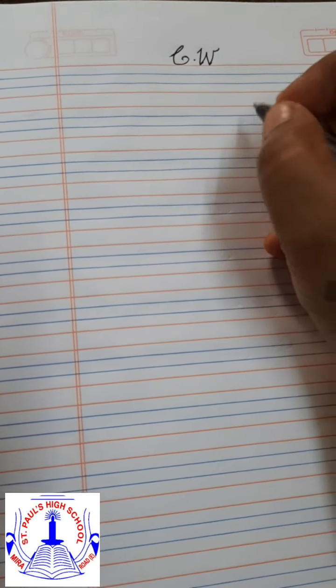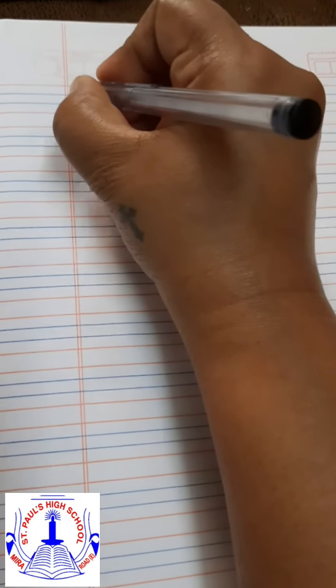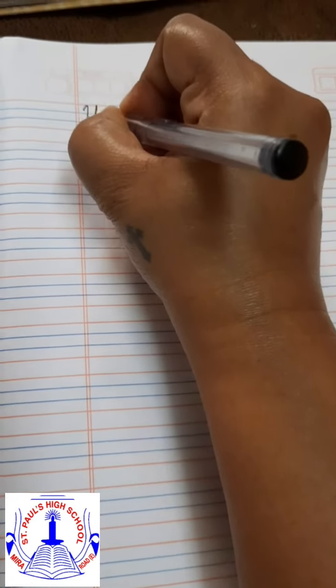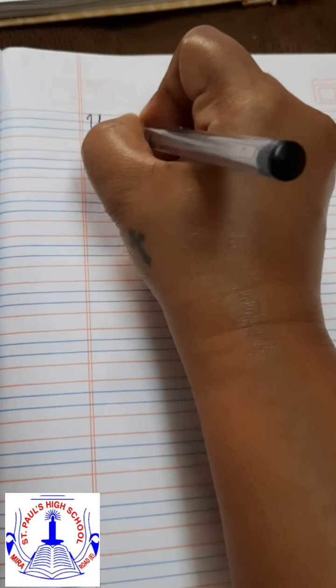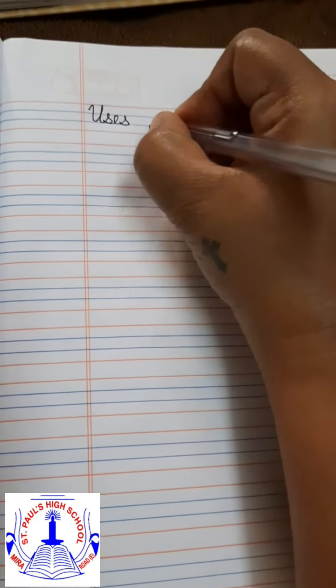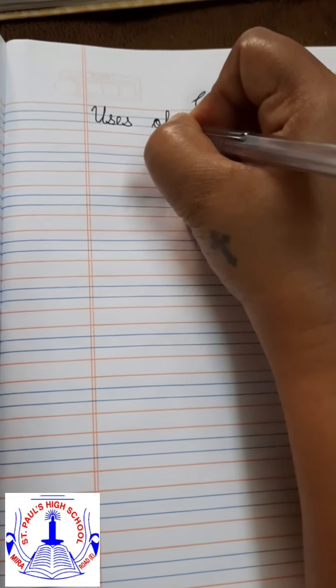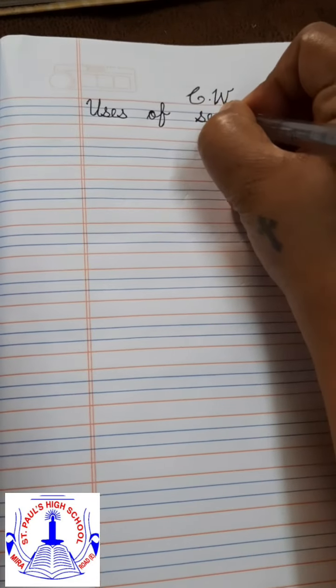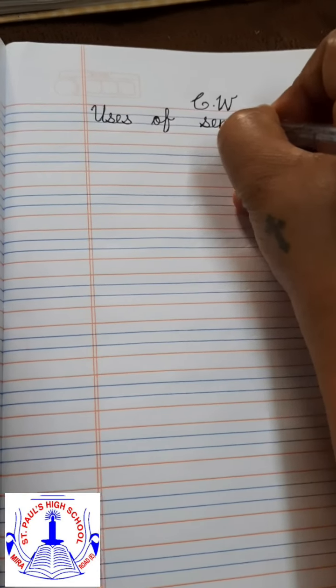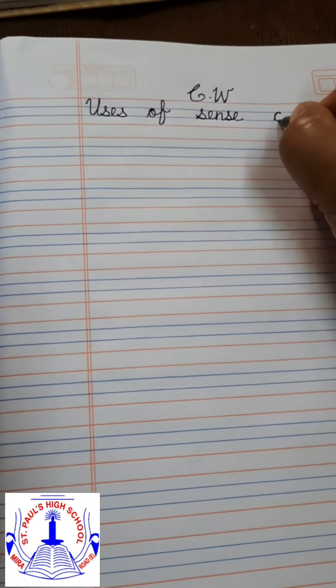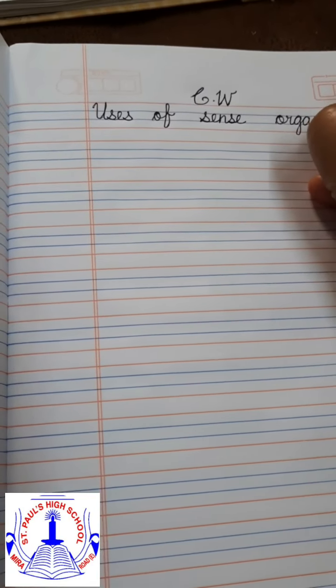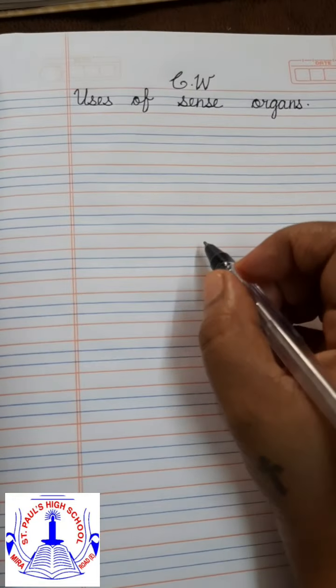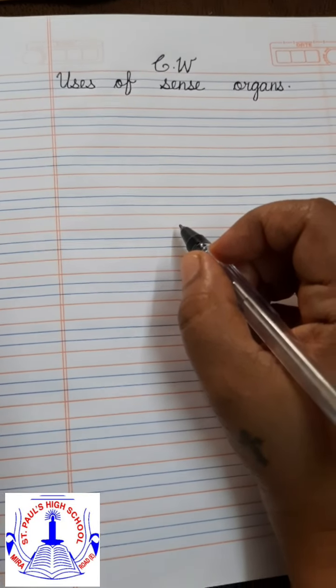On the first line write the heading: Uses of Sense Organs. U-S-E-S, uses. O-F, of. S-E-N-S-E, sense. O-R-G-A-N-S, organs. Uses of Sense Organs.